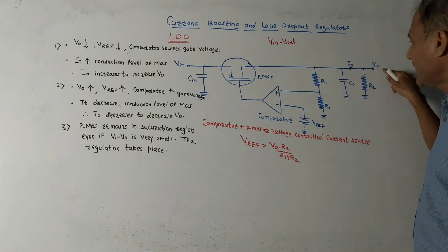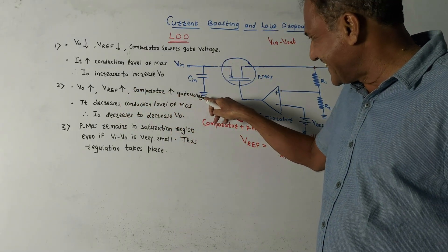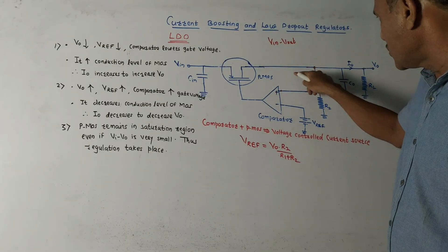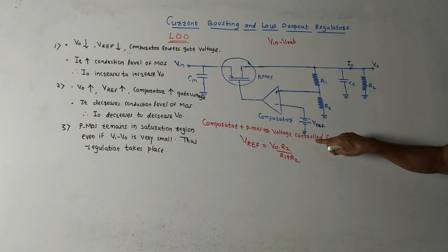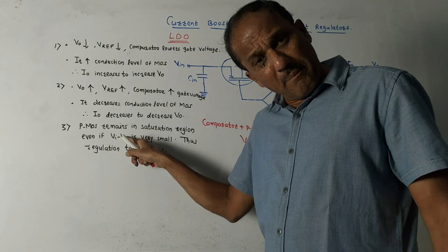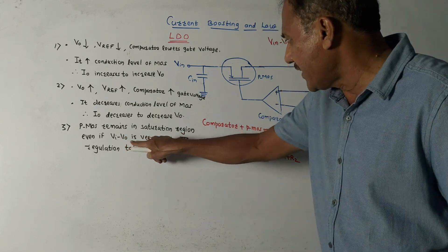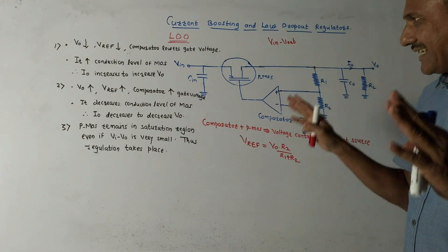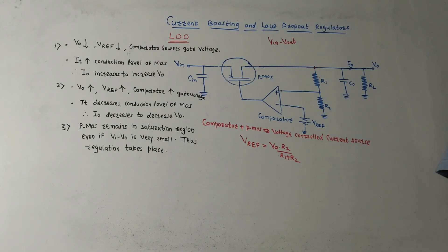In the opposite case, if V0 increases, V_ref also increases, the comparator output increases, raising the gate voltage of the MOSFET, which lowers its conduction level, so I0 decreases and V0 is reduced. This is how the regulator action takes place. The key advantage is that the PMOS remains in the saturation region even with a very small difference between input and output voltage, which is why this circuit is called a low dropout regulator.